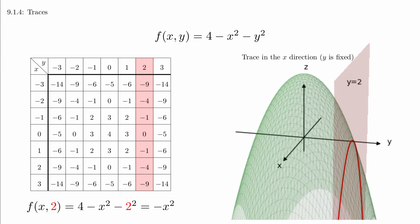The graph has many more points plotted than what the chart shows, but you can see the pattern of values increasing and then decreasing again. You can also see that we can derive the formula for the trace by simply substituting the appropriate value in for y.